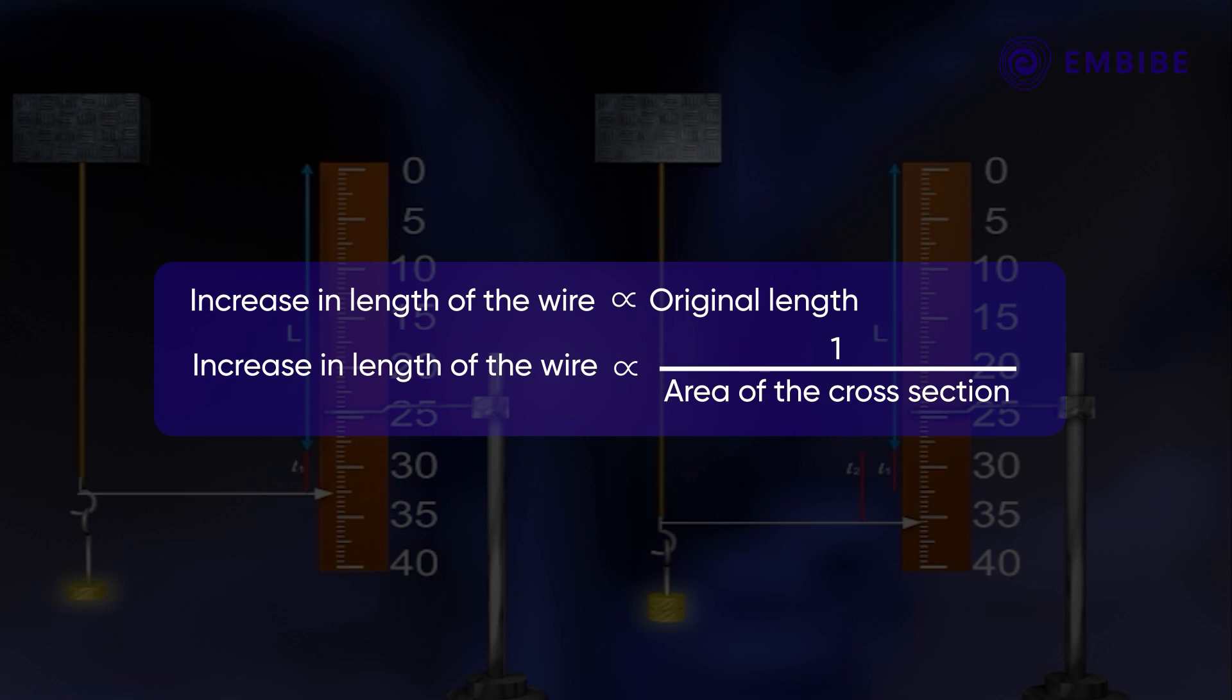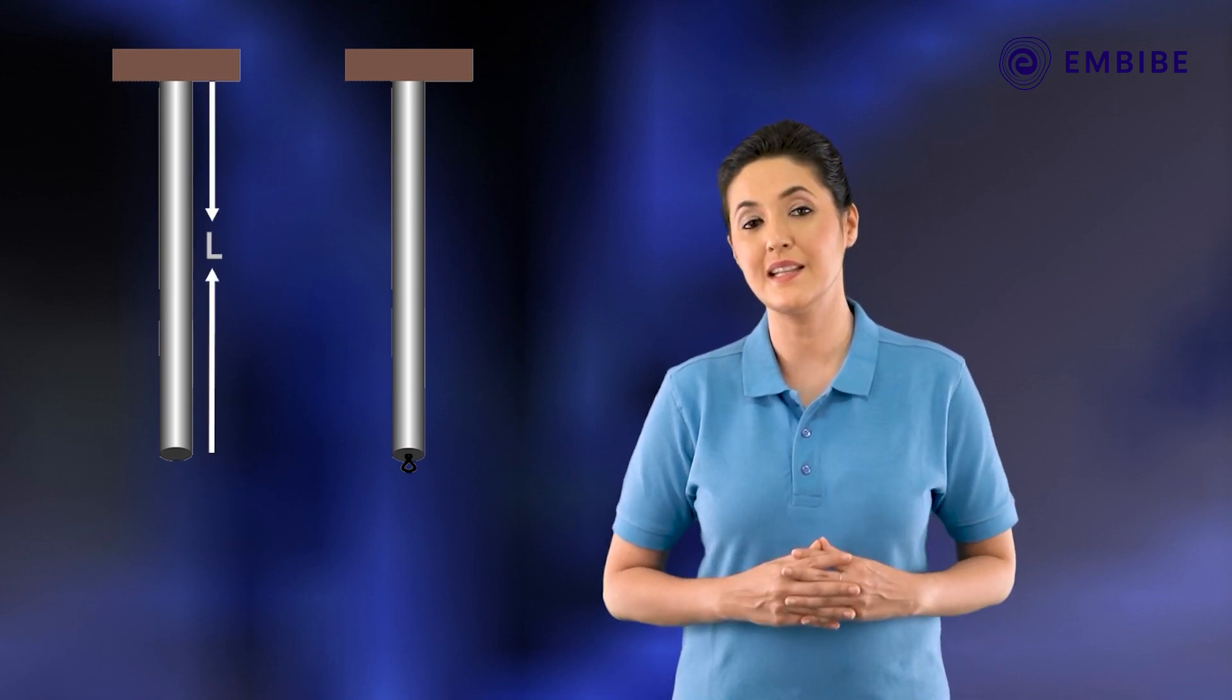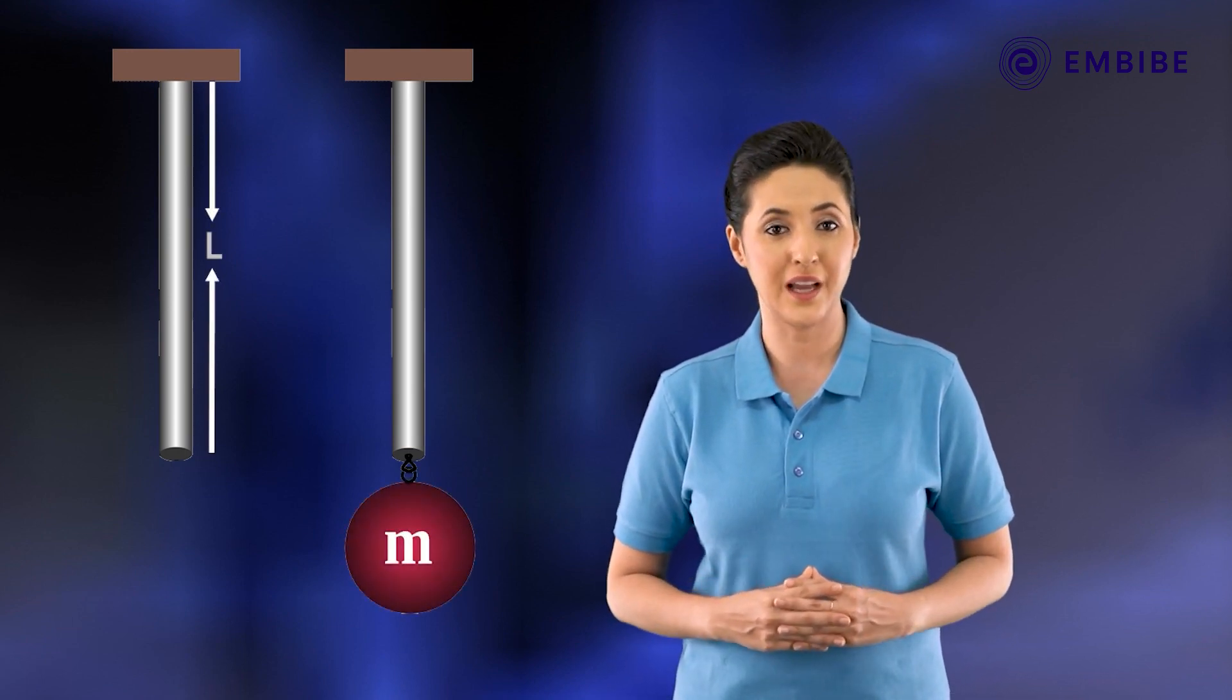Also, the increase in the length of the given wire is directly proportional to the suspended weight. Based on these results, another British scientist Thomas Young demonstrated in 1807 that the weight or load and the increase in length can be described in a very simple way with the help of two physical quantities named stress and strain.